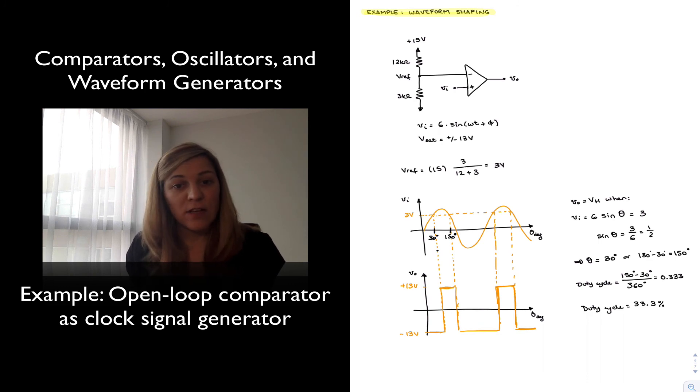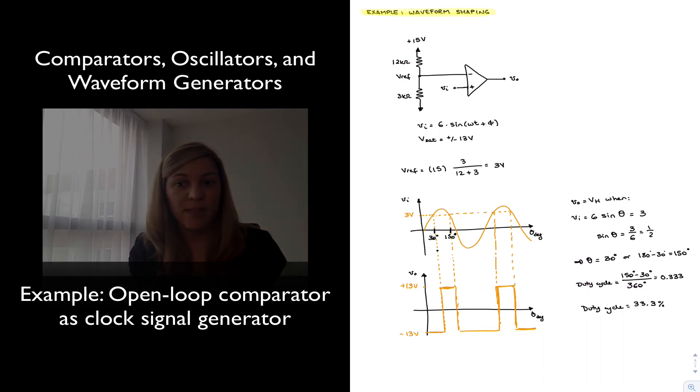Again, by adjusting the value of my reference voltage, in this case it is 3 volts, but if I move it higher then I will have a shorter duty cycle clock, and if I move it lower I will have a longer duty cycle clock. This is an example of how we can use an op amp as a comparator, an open loop comparator, to perform wave shaping in a circuit.